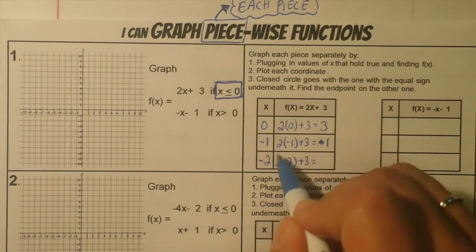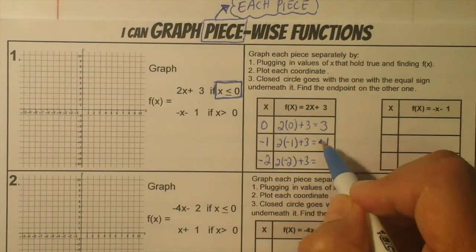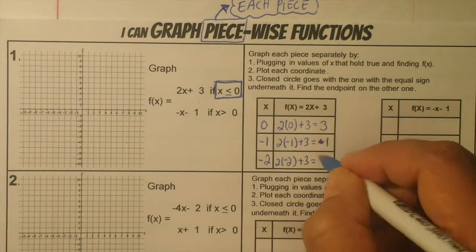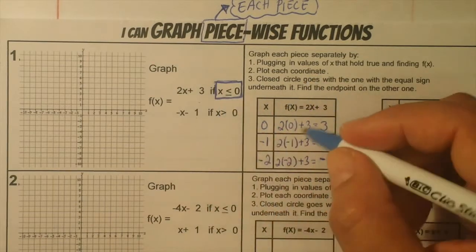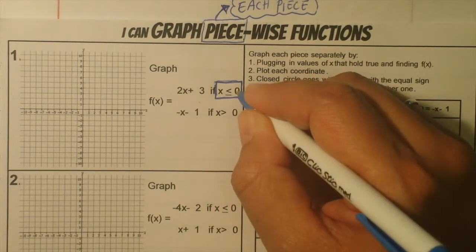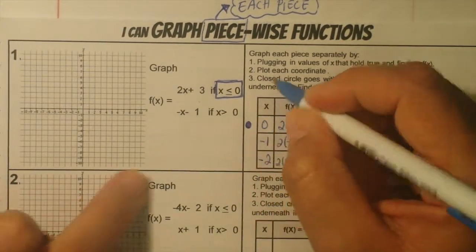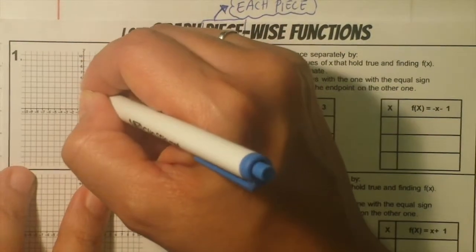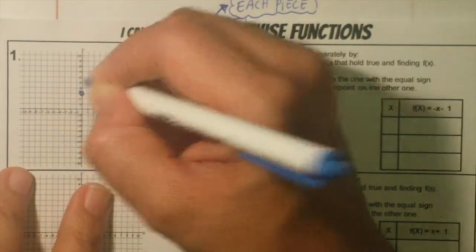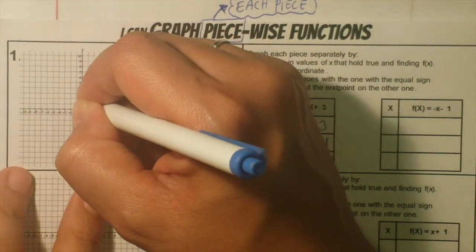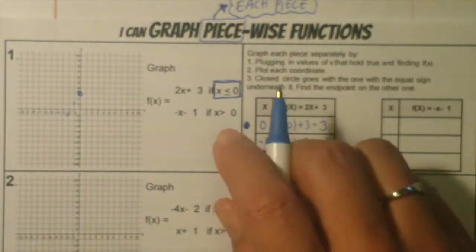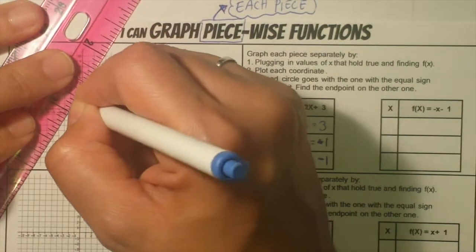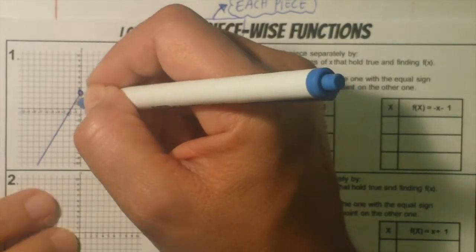So I've gone ahead and corrected it. The closed circle goes with the piece that has the equal sign, so the closed circle is going to go at the point where x is 0. That's where your closed circle is. Plot 0, 3 and put a closed circle right there. Then plot the other points: negative 1 and 1, and negative 2 and negative 1. Take a ruler and join those points and extend the line — but it doesn't go past the closed circle, because x is less than or equal to 0. And that's it for the first function.